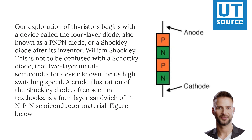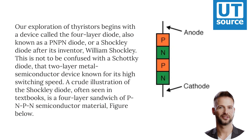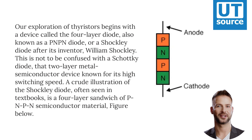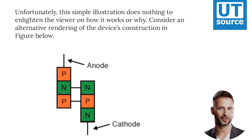This is not to be confused with the Schottky diode, that two-layer metal semiconductor device known for its high switching speed. A crude illustration of the Shockley diode, often seen in textbooks, is a four-layer sandwich of PNPN semiconductor material. Unfortunately, this simple illustration does nothing to enlighten the viewer on how it works or why.